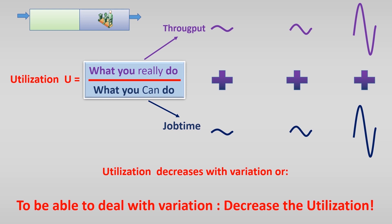If you know that job times vary, and you know that the input is variable, you have to decrease the utilization to keep the waiting times low and to reduce the work in progress.